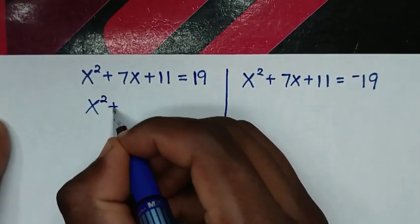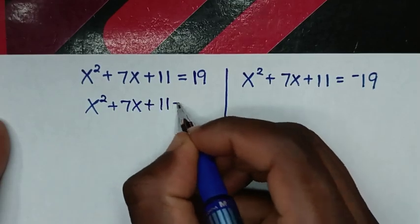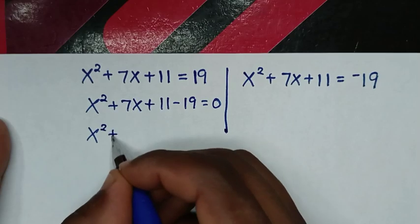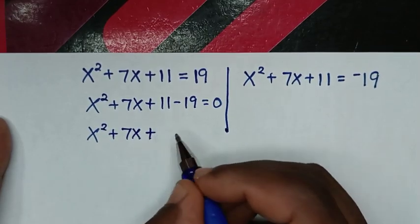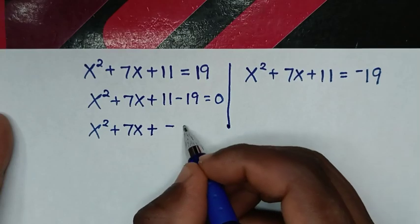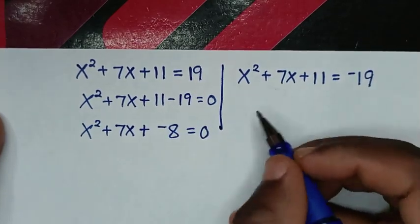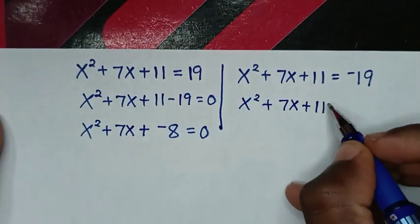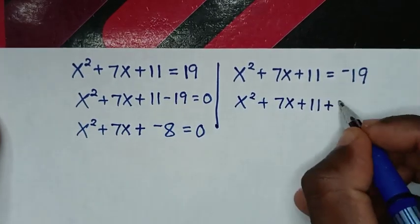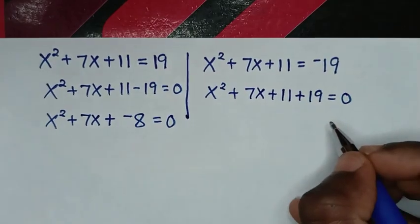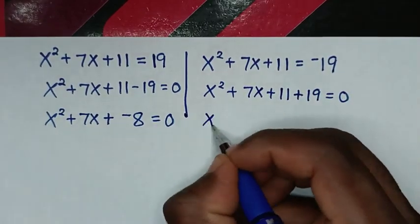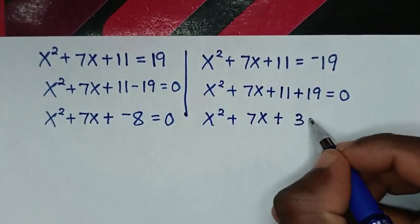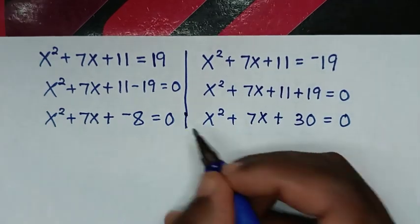For the first solution, taking 19 to the left: x²+7x+11−19 = 0, which gives x²+7x−8 = 0. For the second solution: x²+7x+11+19 = 0, which gives x²+7x+30 = 0.